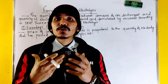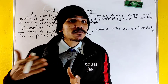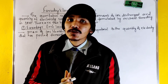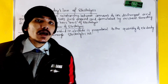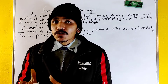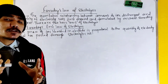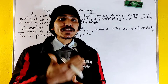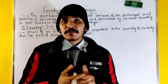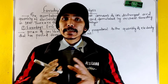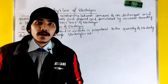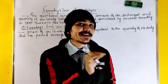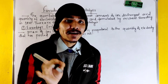Electrolysis is the liberation of ions. The electrolyte — for example, copper sulfate (CuSO₄) — breaks down into its constituent ions. This is called ion formation. This is the quantitative determination of ions: the mass of ions liberated on an electrochemical equivalence basis.